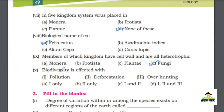MCQ number 10: Biodiversity is affected by — 1. Pollution, 2. Deforestation, 3. Overhunting. A. One only, B. Two only, C. One and two, D. One, two and three. The right answer for this MCQ is D. One, two and three.